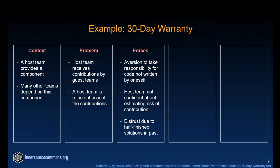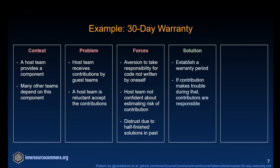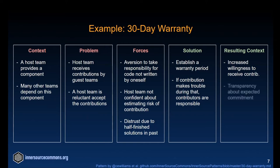The solution this example pattern proposes is to establish a warranty period. If during that period a contribution makes trouble, the contributors are responsible for fixing it. The resulting context is that host teams are more willing to receive contributions, and it creates transparency about the expected commitment by contributors. However, it also introduces a new risk: it might discourage contributions.